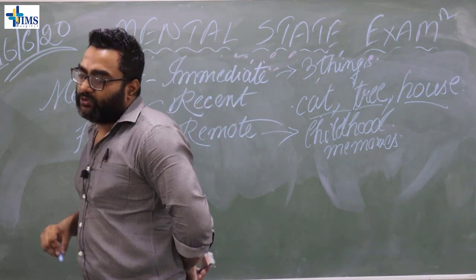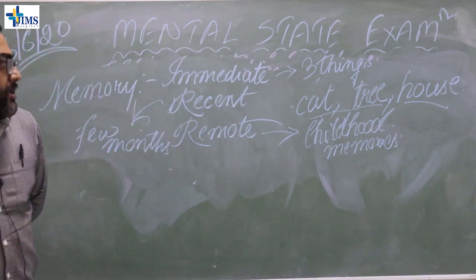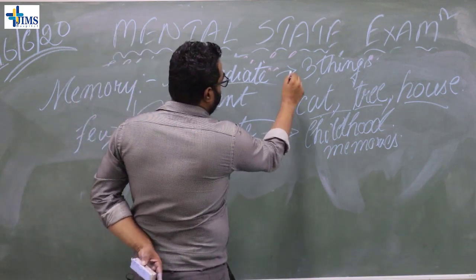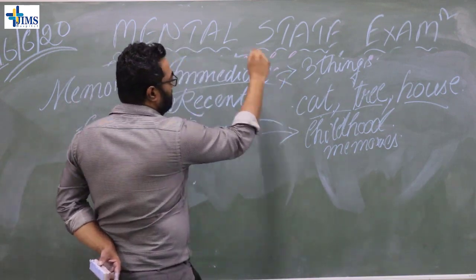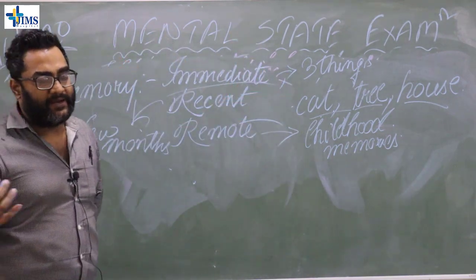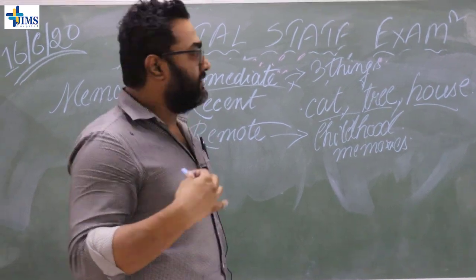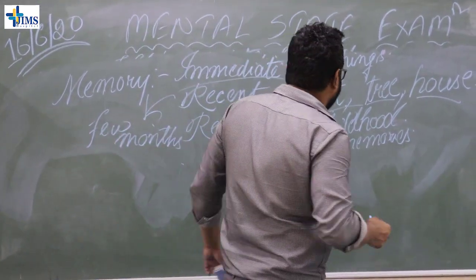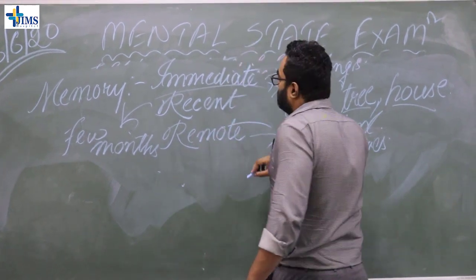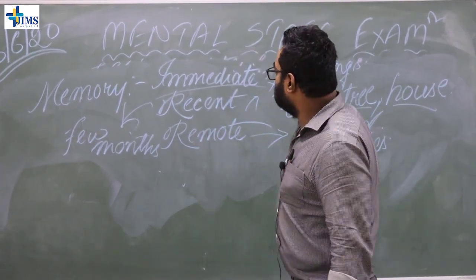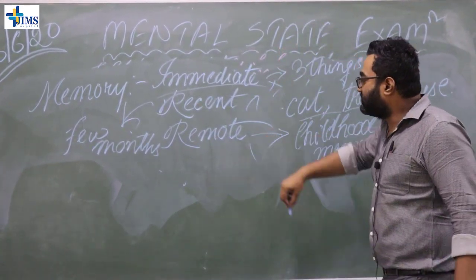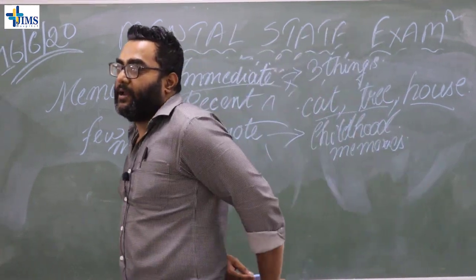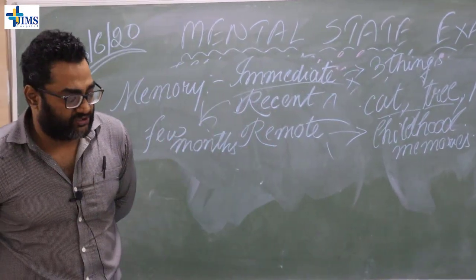Even in patients with dementia, the first thing to go is immediate memory — the brain is not able to register things. Then slowly the recent memory deteriorates, and at the last stage the remote memory also disappears in Alzheimer's or dementia patients.